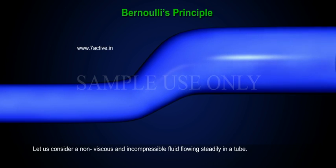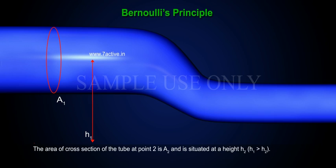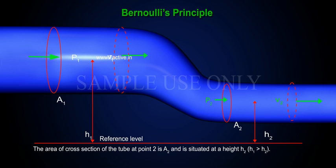Let us consider a non-viscous and incompressible fluid flowing steadily in a tube. The area of cross section of the tube at point 1 is A1 and it is at a height H1 from the Earth's surface. The area of cross section of the tube at point 2 is A2 and is situated at a height H2, H1 greater than H2.